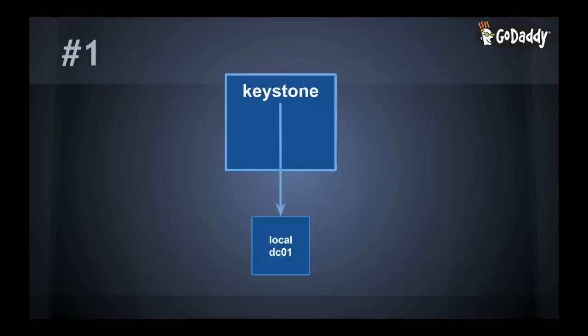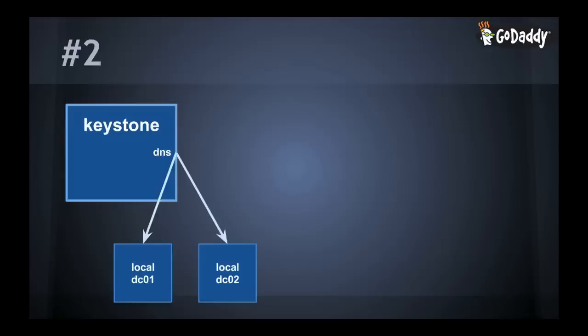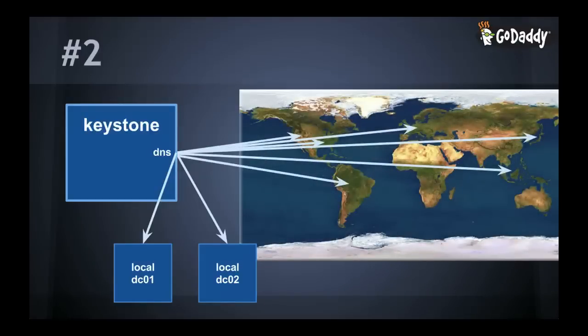We were left with a couple of options. The first is to just pick a domain controller you know is local to you, configure Keystone to go directly to that one, and hope it never goes down. The drawbacks are fairly obvious. The second way is to let DNS do it — use the root domain name in your LDAP URL to get back all the A records for all domain controllers and pick one pseudo-randomly. The problem is you could still be sent to a domain controller that's down, and you get all A records across the domain, which could send you to one that's across an ocean.